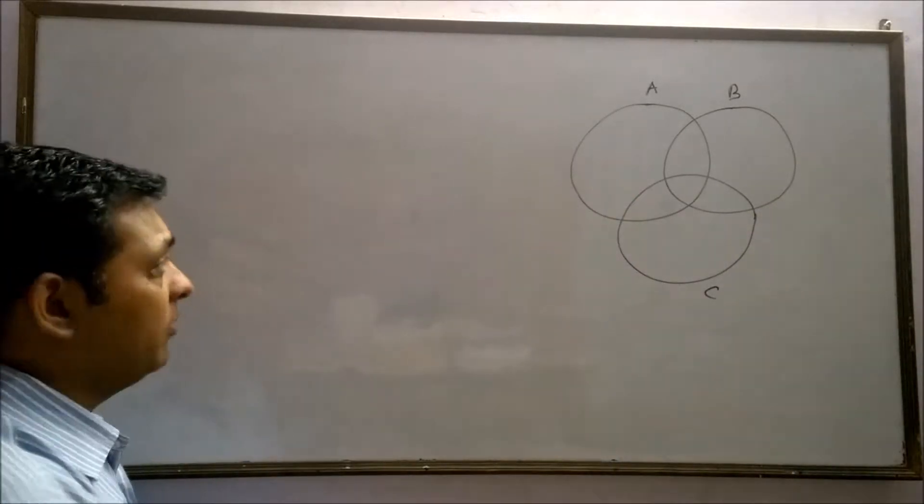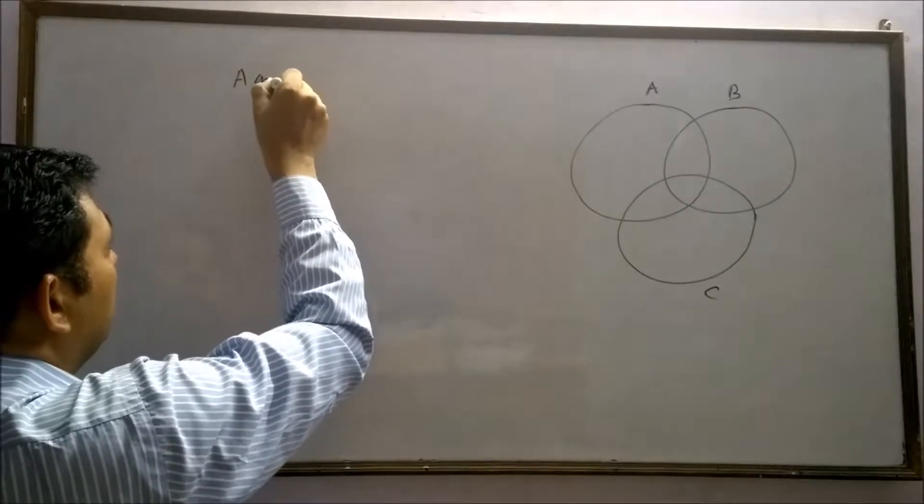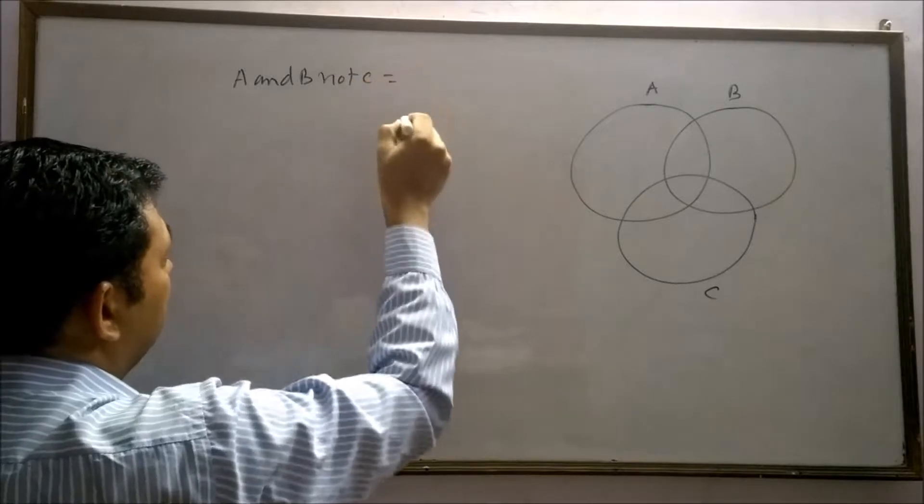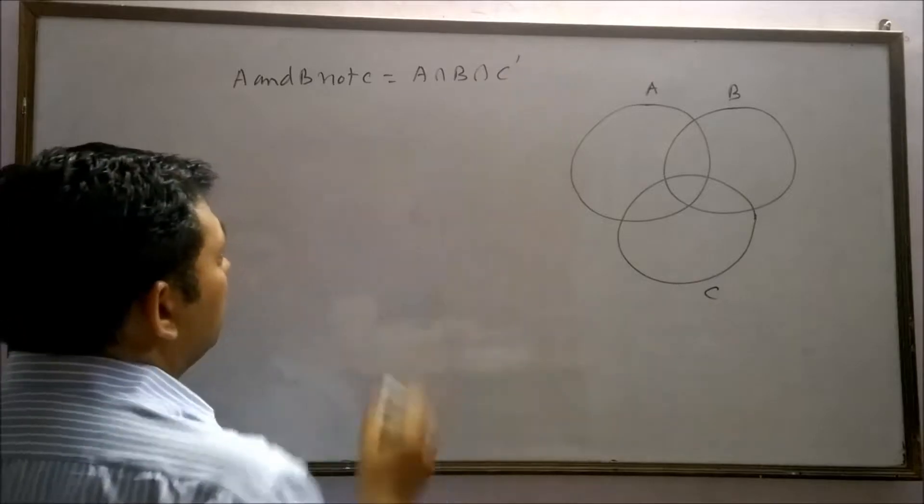Now our requirement is to find A and B but not C, which can be written as A intersection B intersection C complement.